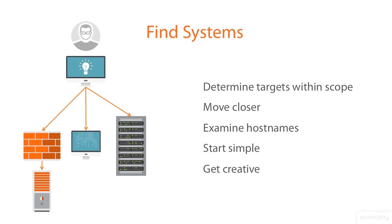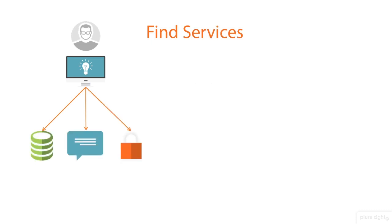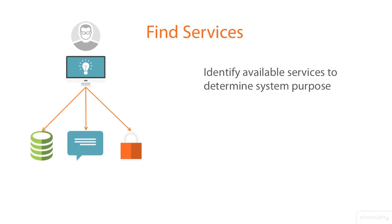We can also examine packet captures and discover systems based on their network traffic. Once we've identified the systems available, we need to know more about what they do. Our next objective is to determine the purpose of each system that we've discovered. We can do this by finding what services these systems offer and use. Services are the methods by which the system communicates and exchanges data with other systems on the network.